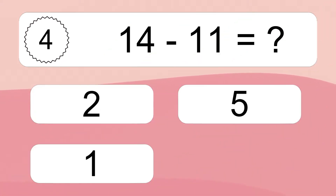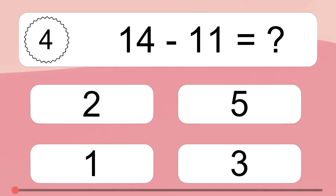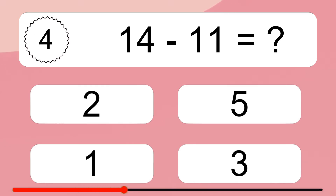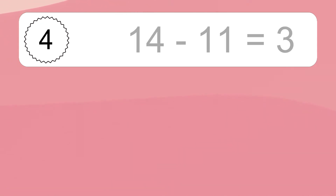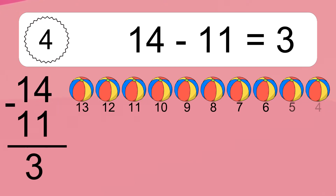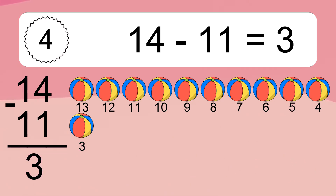14 minus 11 equals what? 14 minus 11 equals 3. Let's count it: 13, 12, 11, 10, 9, 8, 7, 6, 5, 4, 3.